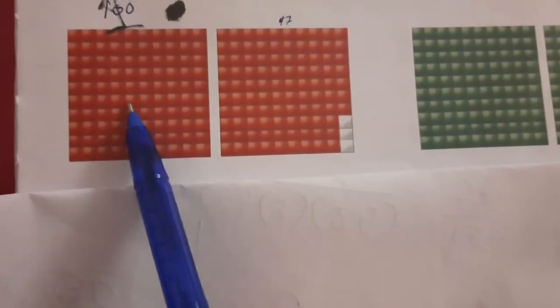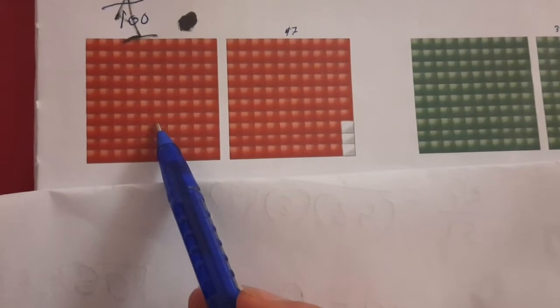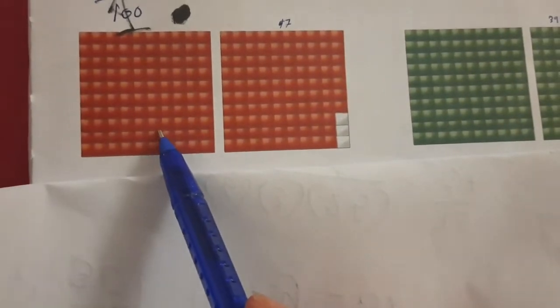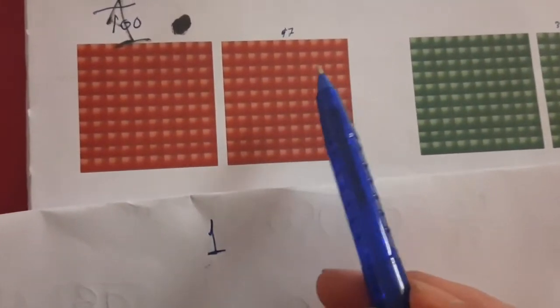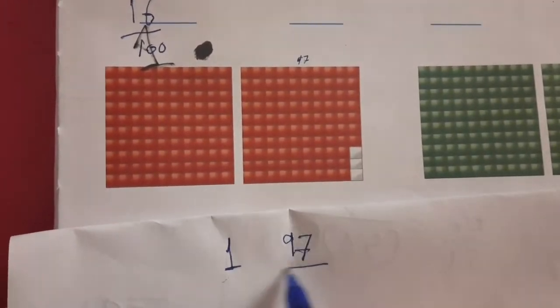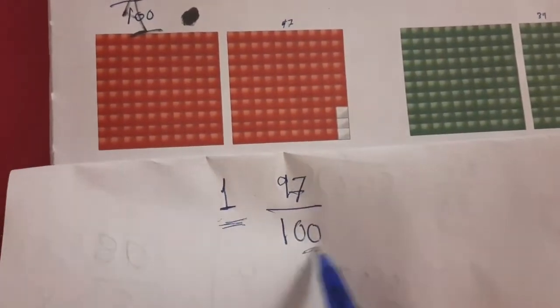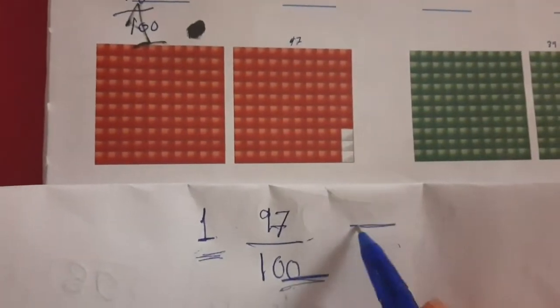Now look here. We have this shape divided into one hundred equal parts and we have one hundred colored parts. The fraction is one hundred out of one hundred, so this is one whole number. And here we have 97 colored parts out of one hundred — ninety-seven out of one hundred. So we have a whole number with a fraction. We will convert into decimal. We have a whole number — yes. So we will put one in the ones place, then decimal point.